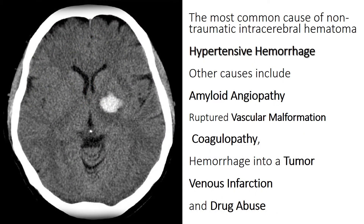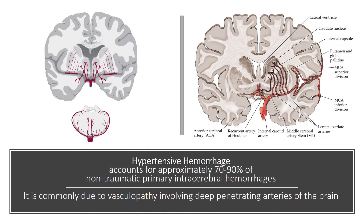The most common cause of non-traumatic intracerebral hematoma is hypertensive hemorrhage. Other causes include amyloid angiopathy, a ruptured vascular malformation, coagulopathy, hemorrhage into a tumor, venous infarction, and drug abuse. Hypertensive hemorrhage accounts for approximately 70-90% of non-traumatic primary intracerebral hemorrhages. It is commonly due to vasculopathy involving deep-penetrating arteries of the brain.